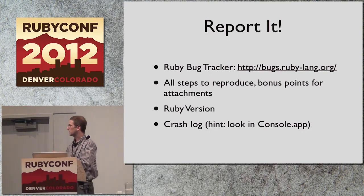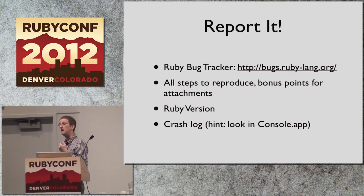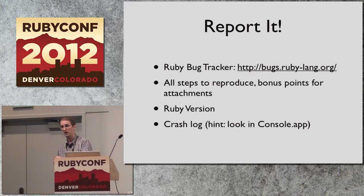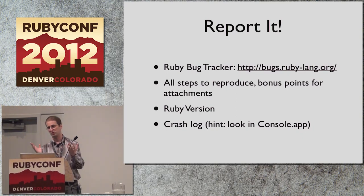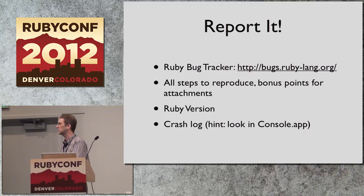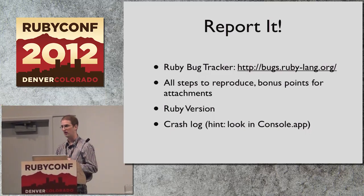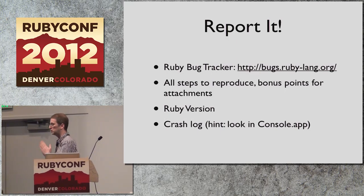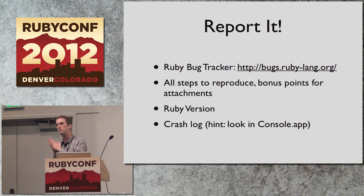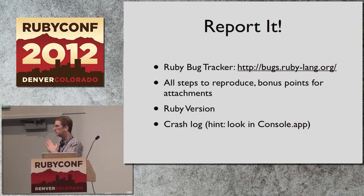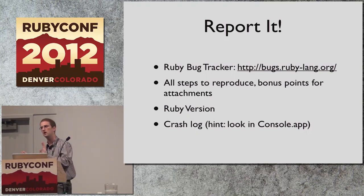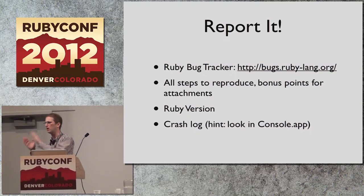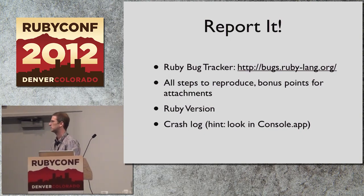The other reason duplicate bug reports are good is that not everybody is going to hit the bug the same way. One of the most challenging things about fixing any bug is narrowing down the specific set of criteria needed to trigger it. Ruby has a bug tracker at bugs.ruby-lang.org. When reporting, make sure you include all of the steps — it's really good if you can attach a little script that shows the bug. Make sure to note what Ruby version you're using, since not every version has the same bugs. And if it's a crash, attach the crash log.